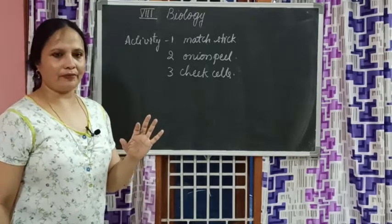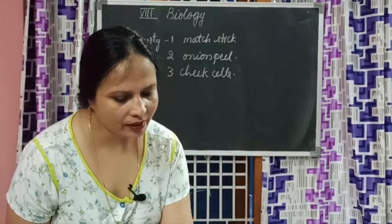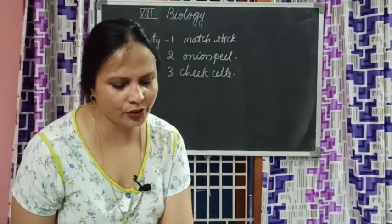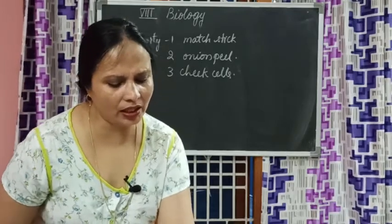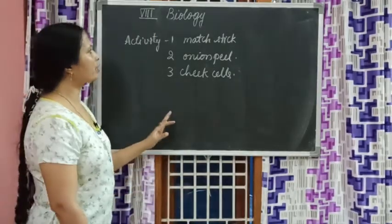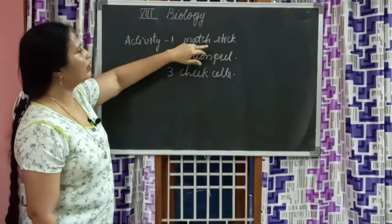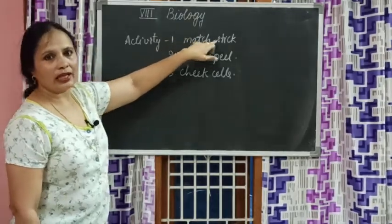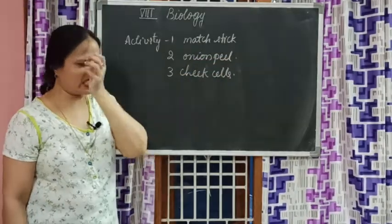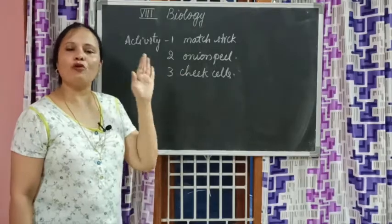Robert Hooke made us understand that every single organism is made up of cells. For that, we observed two plant-based samples - one dead cell which is matchstick, and one onion peel from a plant - and one cheek cell from animals. From this we understood that what Robert Hooke said is right.